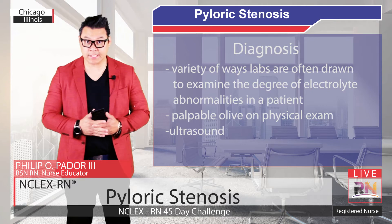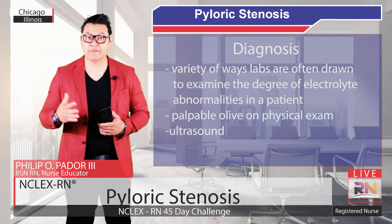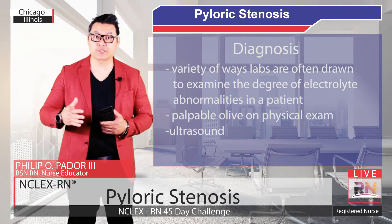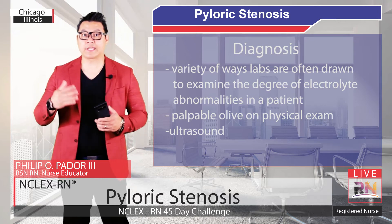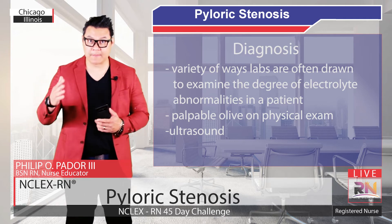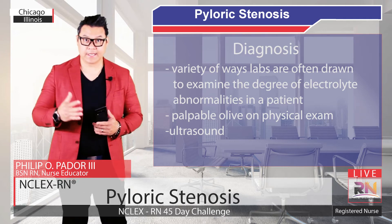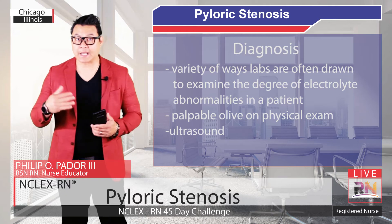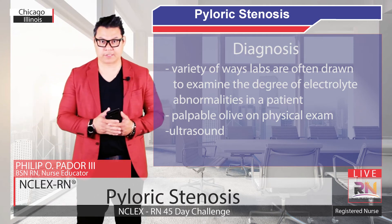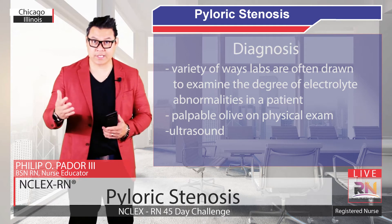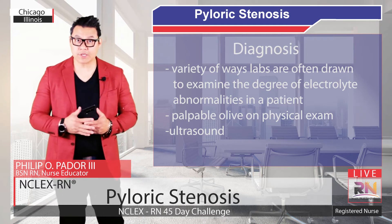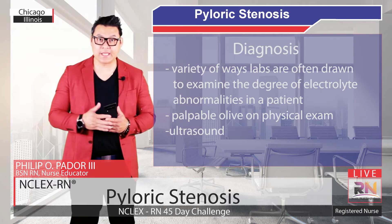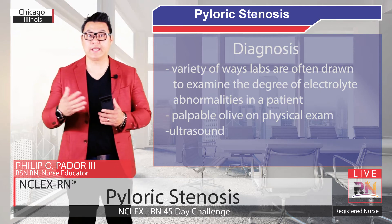Diagnosis can be made in a variety of ways. Labs are often drawn to examine the degree of electrolyte imbalance and abnormalities in the patient. Electrolyte imbalances are from the loss of large amounts of gastric hydrochloric acid and retention of bicarbonate, leading to hyperchloremic metabolic acidosis. The loss of HCL and KCL is from the vomiting, and there is a decrease in release of pancreatic bicarbonate because of the gastric outlet obstruction. This dehydration will lead to a contraction alkalosis as well. These electrolyte abnormalities are now seen less commonly given that diagnosis is being made earlier in the disease process.